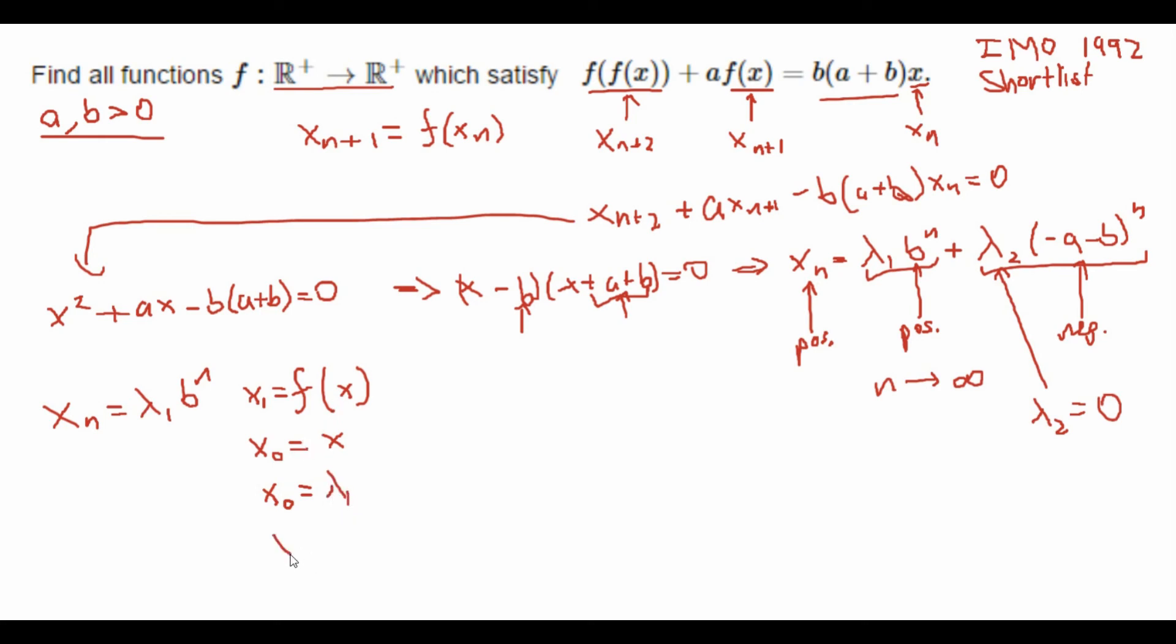But this means that x₁ is simply equal to x₀ * b¹, which is just b, which is equal to b times, and remember x₀ is just x. So it's x. But then finally, we know that x₁ is just f(x). So f(x) is equal to b*x.